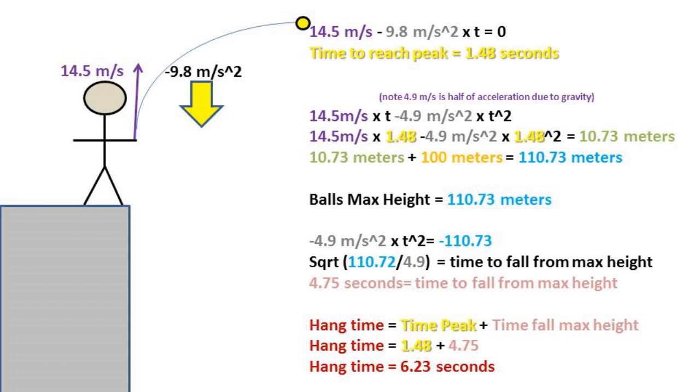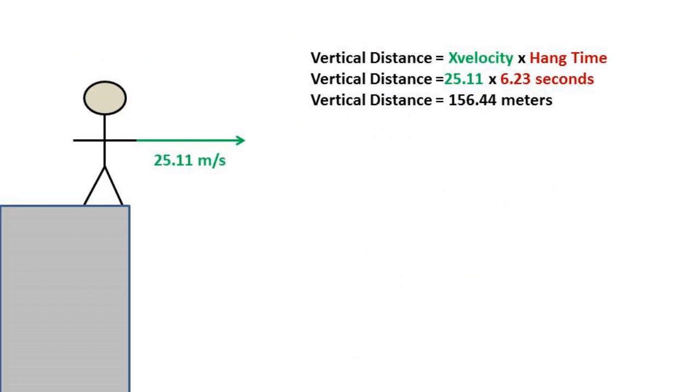Now to give us our vertical distance at landing, we can take the velocity in the x direction times the hang time, which will give us 156.44 meters from the building at landing.